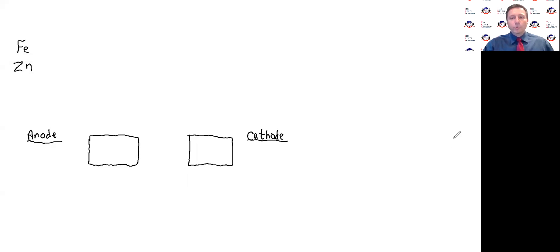Welcome AP students. I wanted to do a tutorial today on how to determine which metal should be oxidized and which should be reduced in order to make a galvanic cell. So I'm starting with iron and zinc as you can see here on the screen.